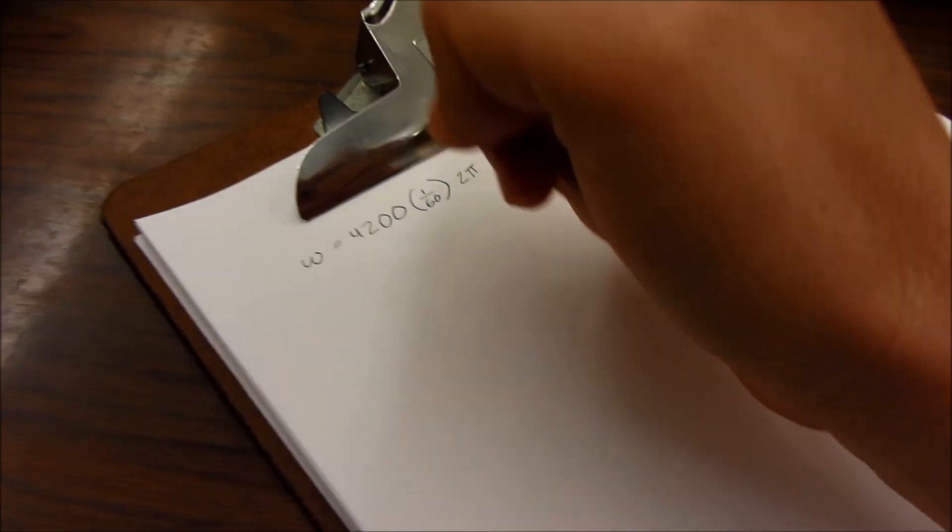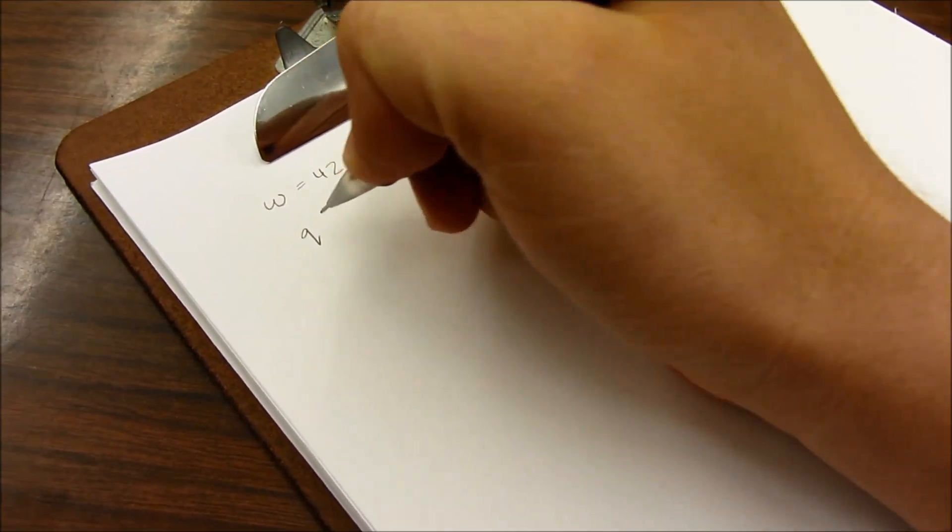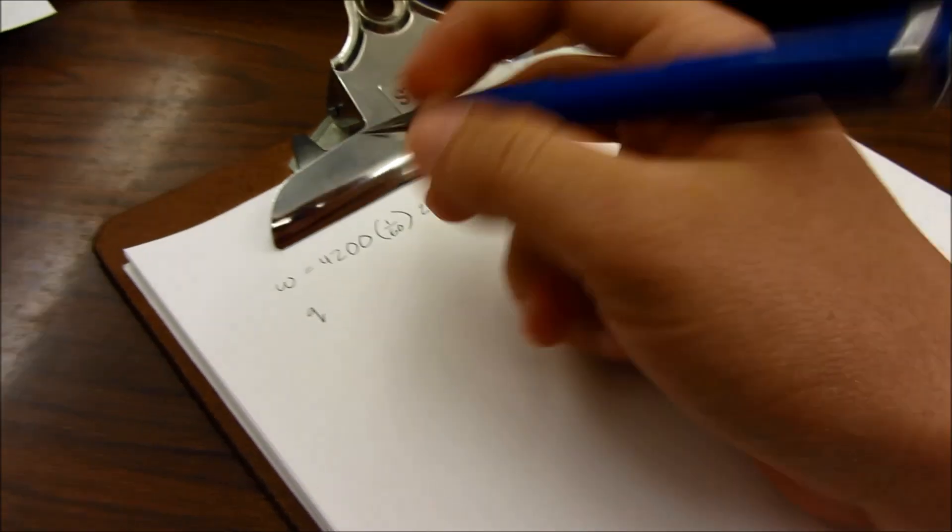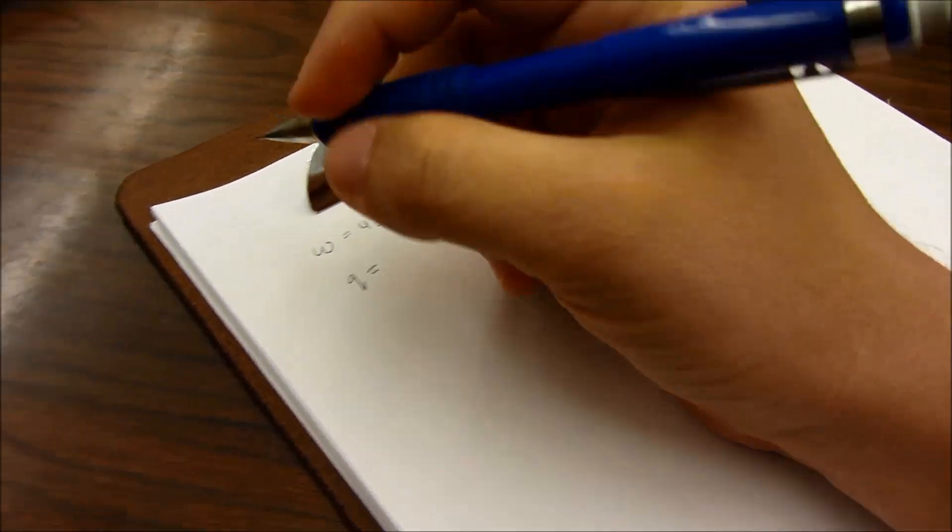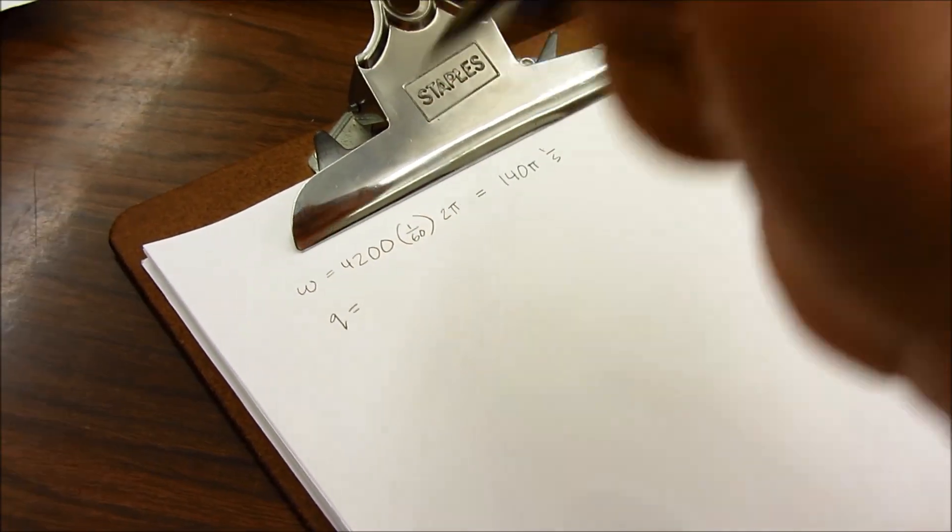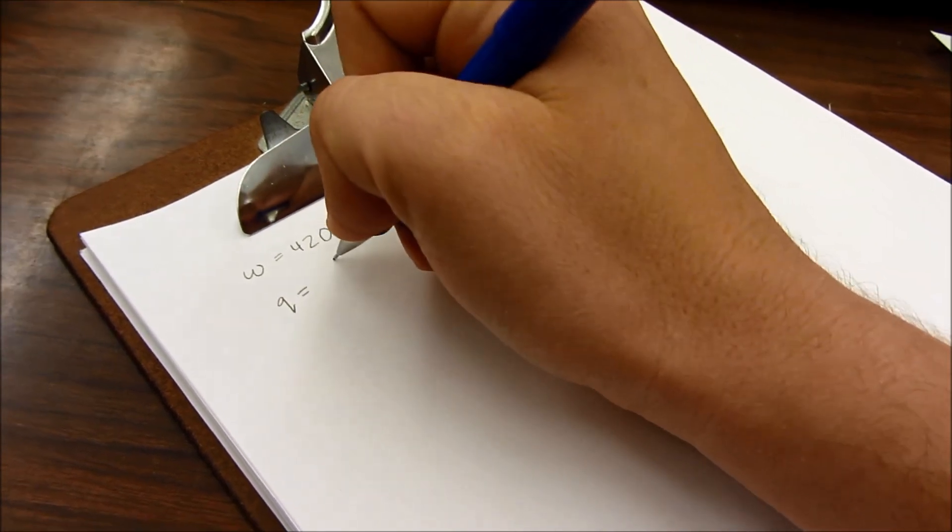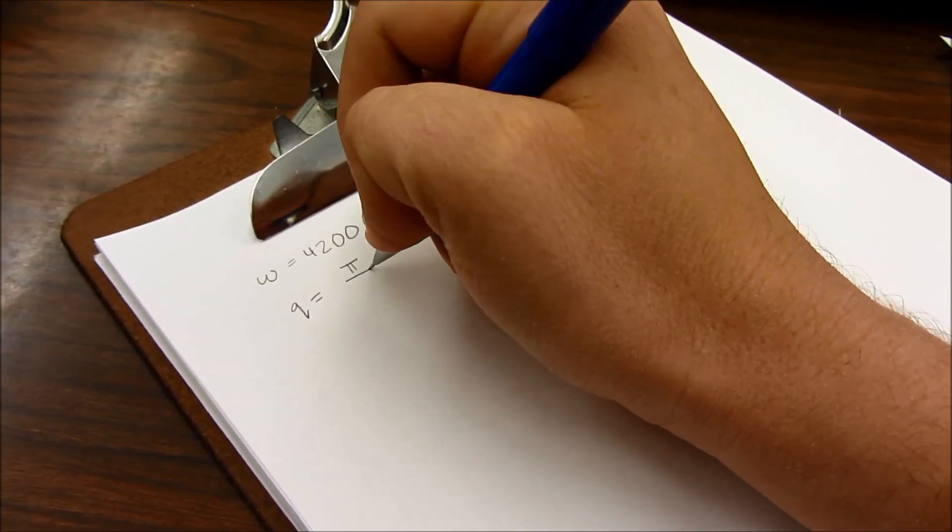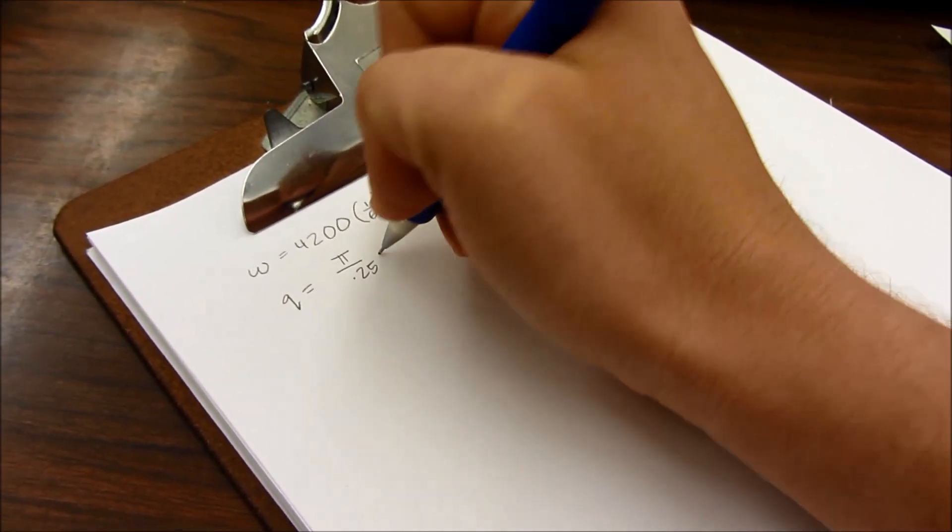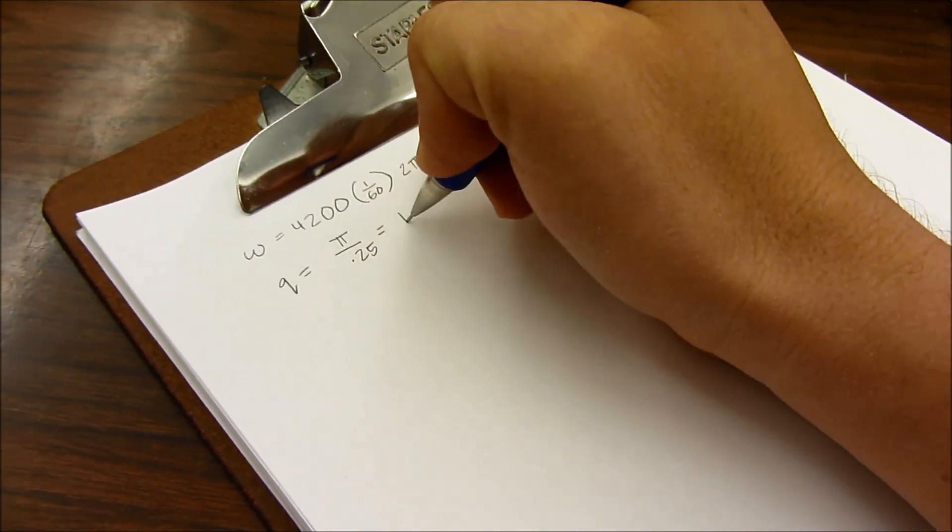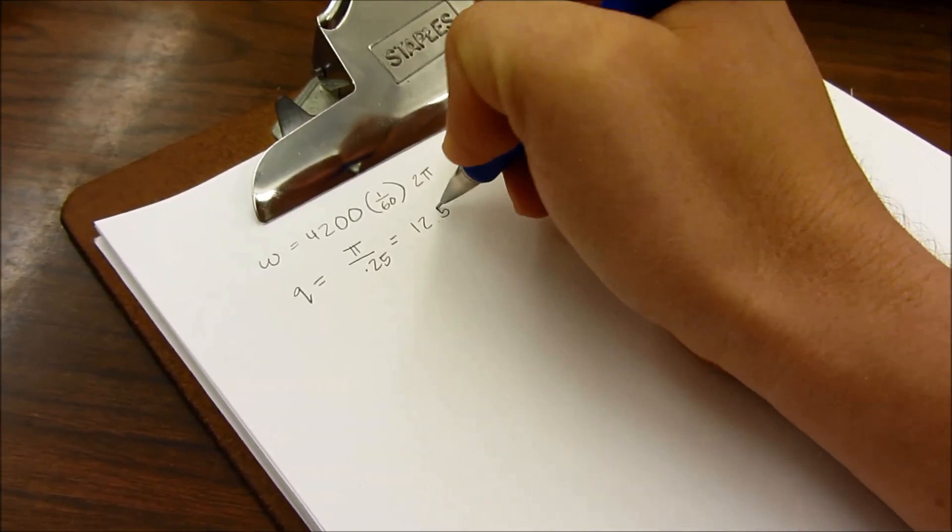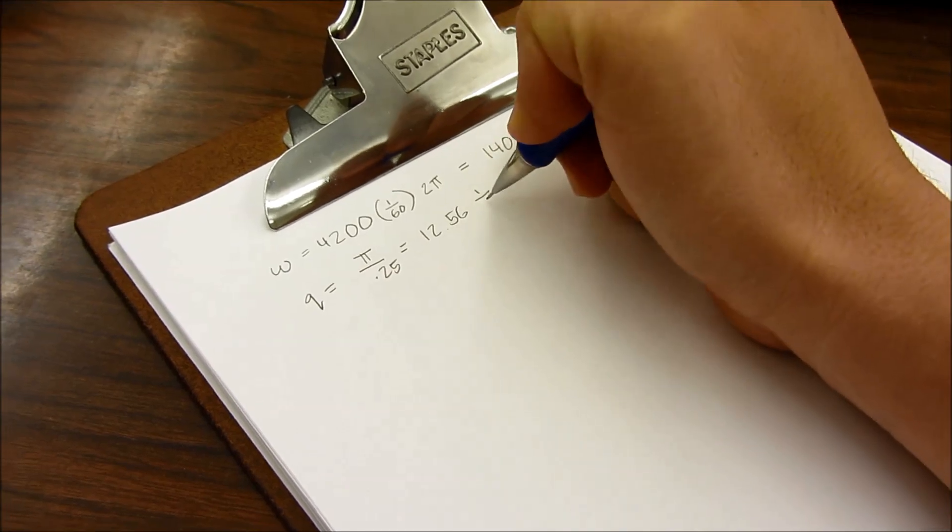Now, our pitch rate, Q, again, that was by me just pushing the handle up and down. As best I could tell, I was going about a half a turn per quarter second. So we're just going to estimate that at pi over 0.25, which will give us 12.56 radians per second.